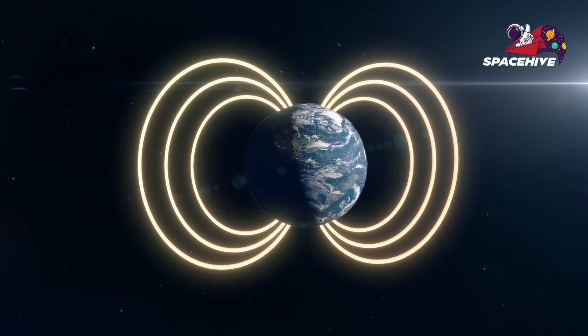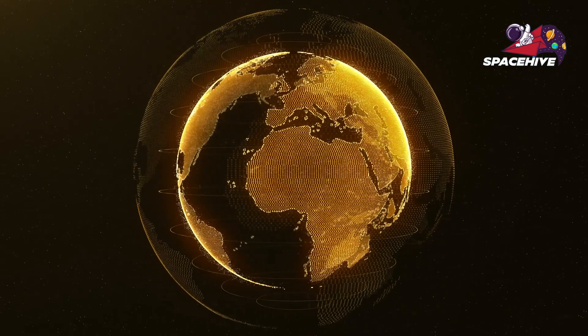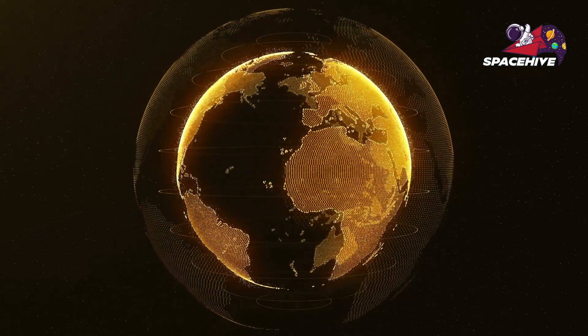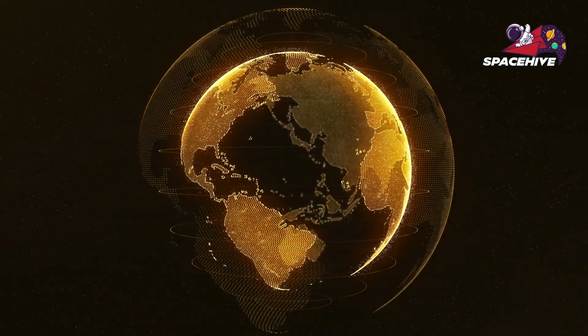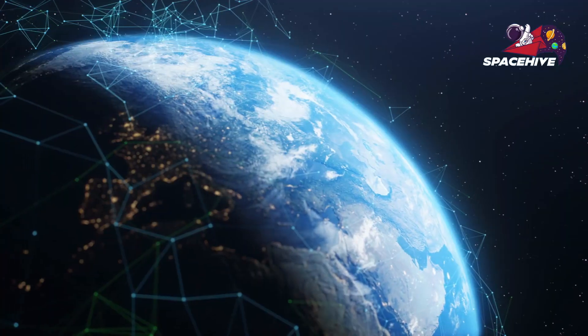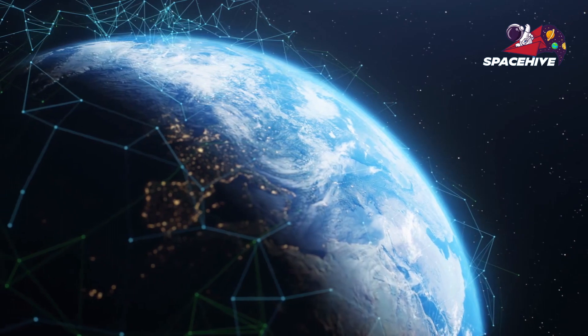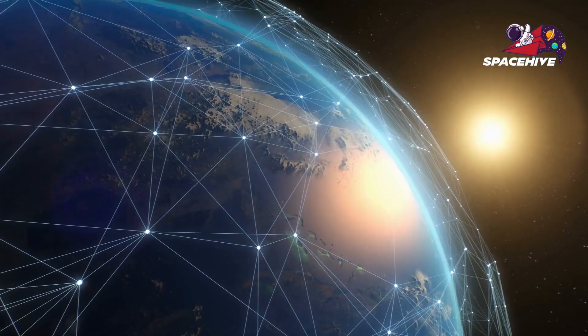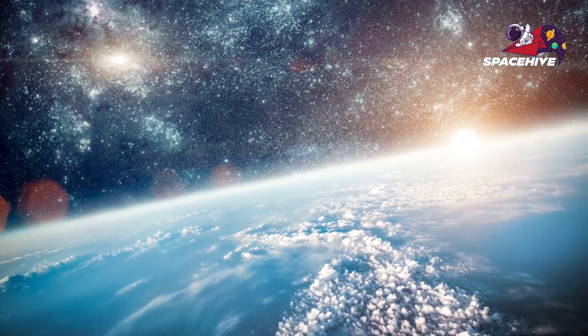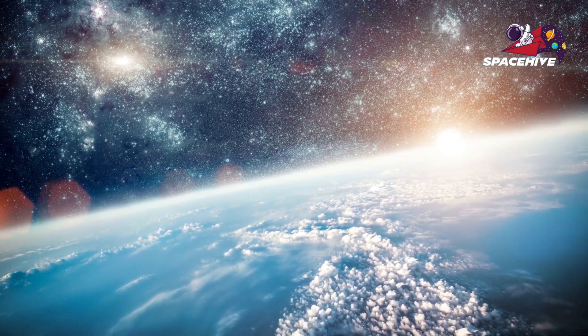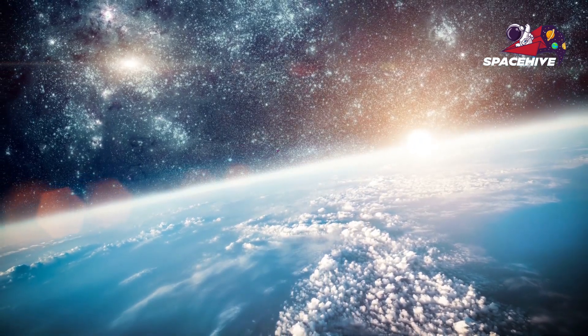This outermost layer of the atmosphere is known as the exosphere, and it is particularly thin. The air up there is so spread out that molecules can travel for many kilometers without colliding with each other. But that's not all. The exosphere is also home to an unusual phenomenon known as the geocorona. This is a faint halo of hydrogen gas that surrounds the Earth and extends out to about 630,000 kilometers from the planet.